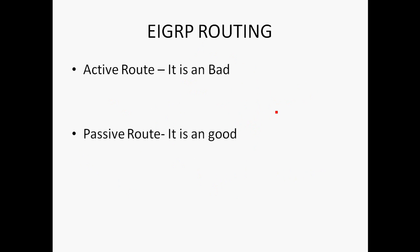Regarding active and passive routes: a passive route means everything is working fine. An active route means the network is not working fine. If you run 'show IP route', a passive route indicates normal operation, while an active route indicates a problem.